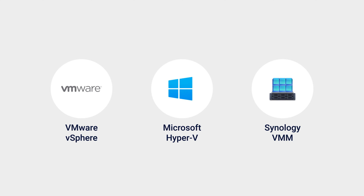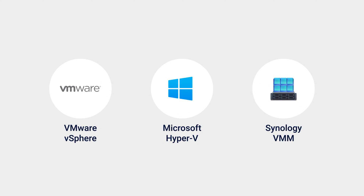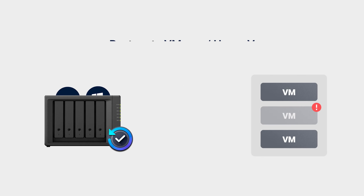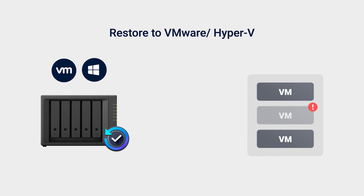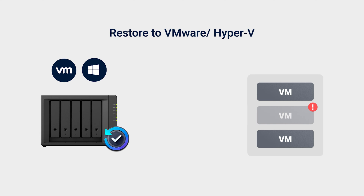Active Backup for Business provides the following restoration options for different scenarios. When your essential services are down, you can choose Restore to VMware vSphere or Restore to Microsoft Hyper-V, and select Instant Restore to instantly restore your VM. This option temporarily stores the VM data on your NAS until the hypervisor is responsive, then you have to migrate the data back to the VM.